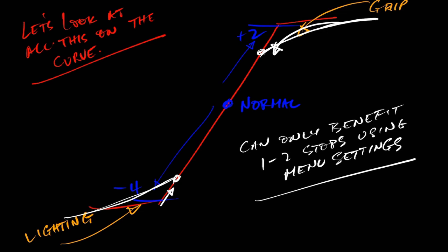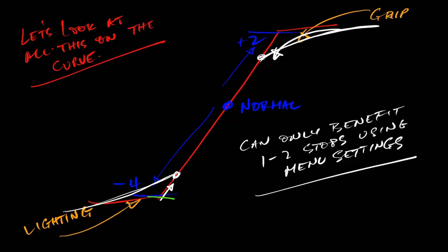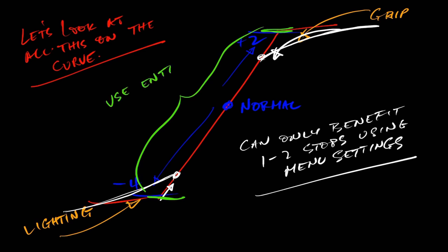The important thing is that when you go into a set and you're lighting a setup, you understand the latitude of your camera and you've got to bring all those ratios within that range — whether it's six, eight, ten, or fifteen stops. You also want to use the entire straight-line portion of the curve, because that gives you the greatest tonal separation throughout the set. Bring the highlights down within range, bring the shadows up within range, and use the full straight-line portion of that curve.